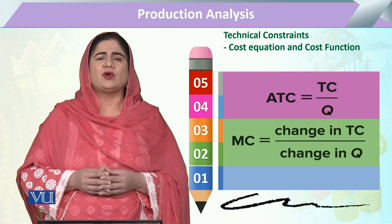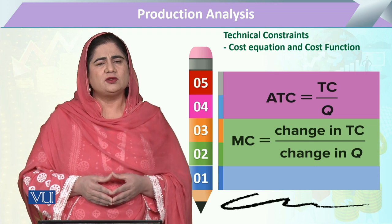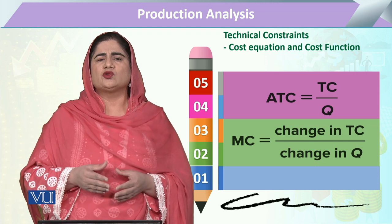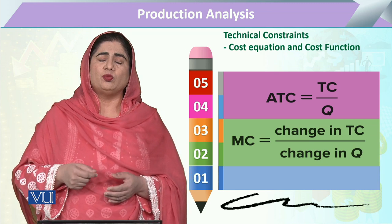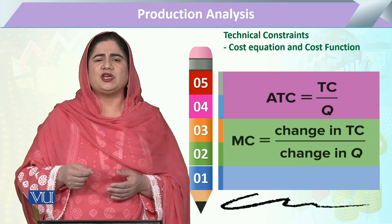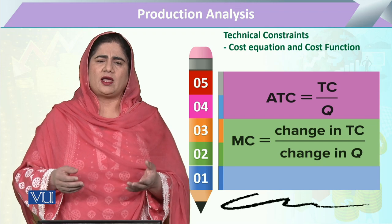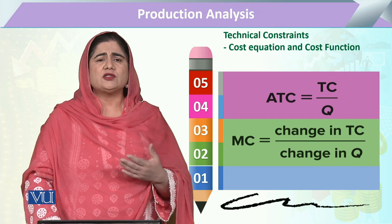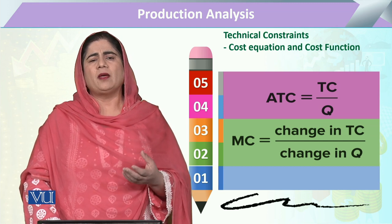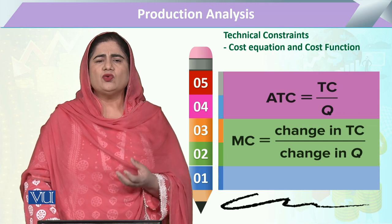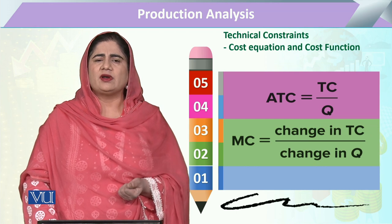Marginal cost is particularly related to the change in total cost due to the change in output. We can write this as the change in TC divided by the change in Q (output). For the change symbol we can use delta or the curly d notation. These various mathematical forms give a very clear picture of all these terms in our calculation system.